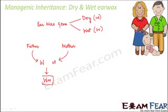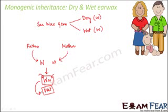So what would be the genotype of your earwax gene? It would be capital W small w. What should the phenotype be — the actual trait you have? The actual trait would be wet earwax. Even though you have one capital W and one small w, your earwax would not be somewhere between wet and dry. It would be wet earwax because capital W is dominant over small w. This is what we mean by monogenic inheritance: one gene — capital W — controls and decides the trait.